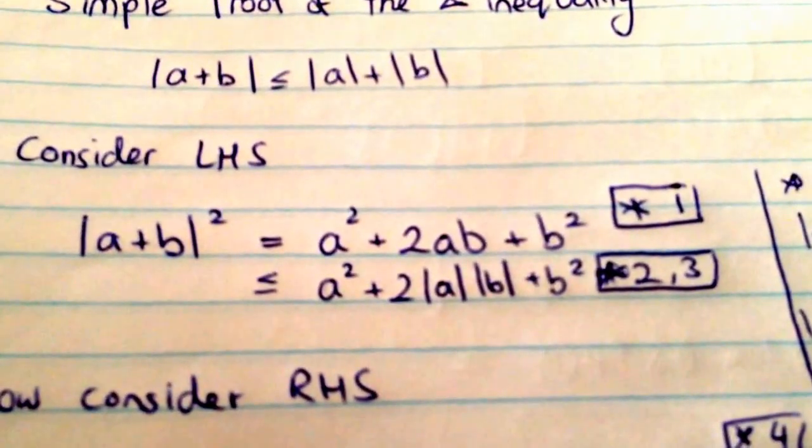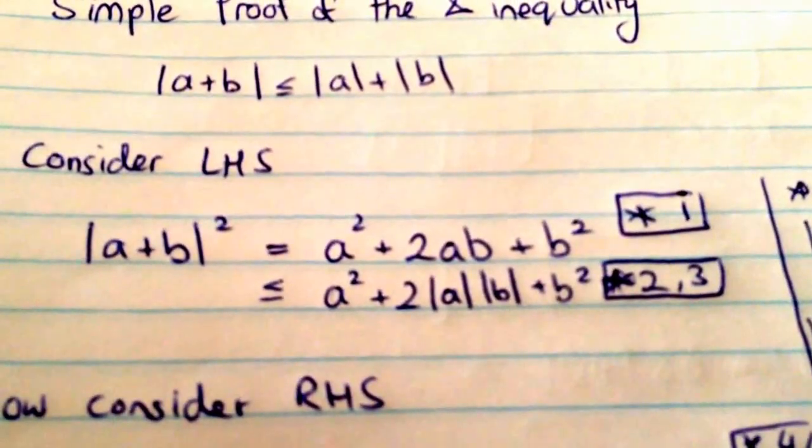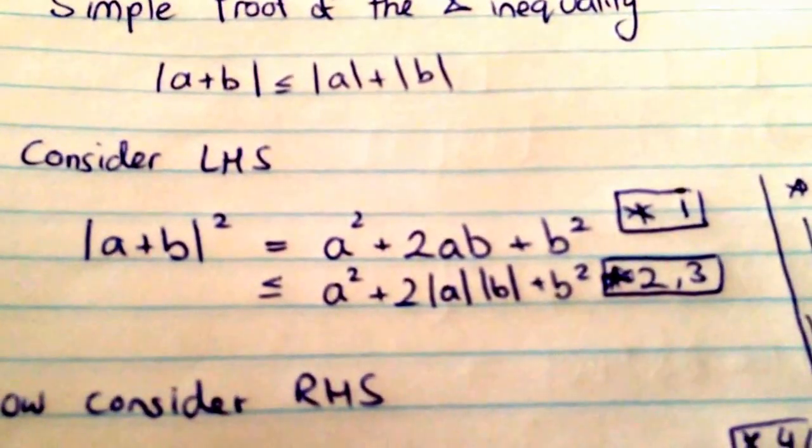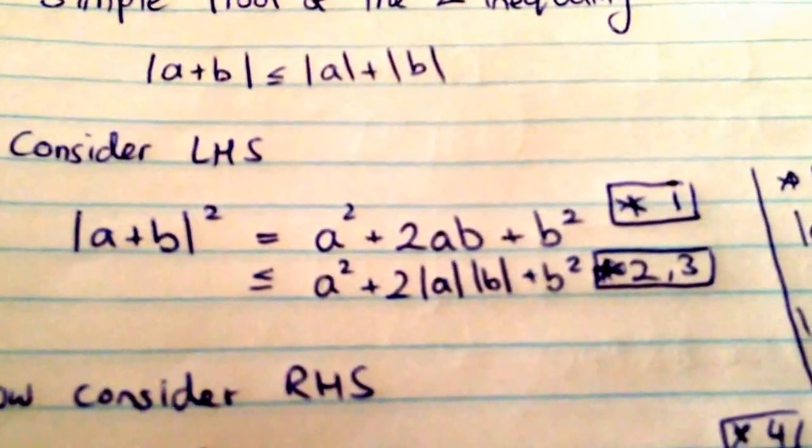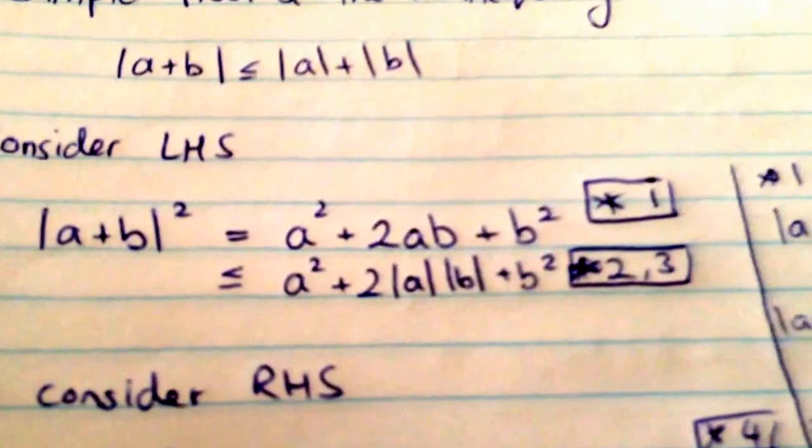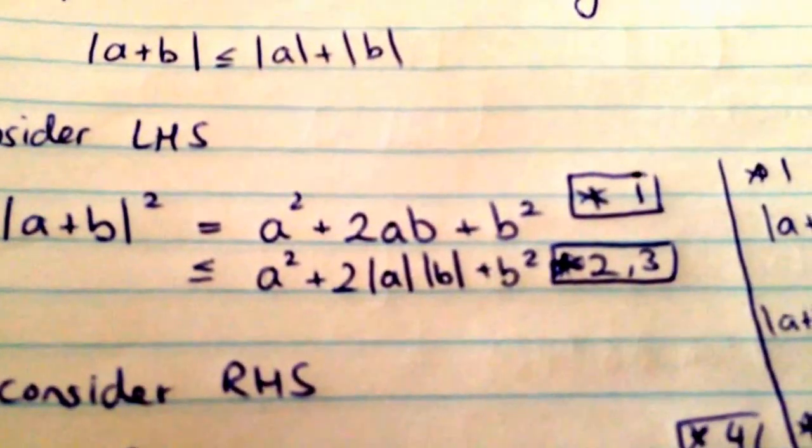We're going to consider the square of these expressions, the square of the left-hand side and the square of the right-hand side. It just makes it easier, and you'll see why in a minute. If we have mod a plus b squared, it's just going to be equal to a squared plus 2ab plus b squared.